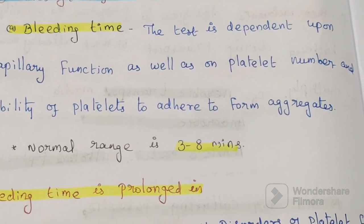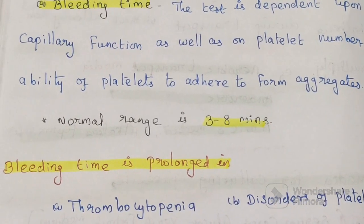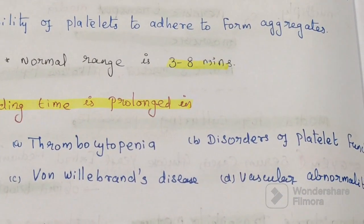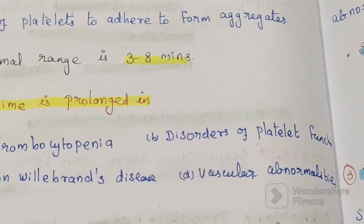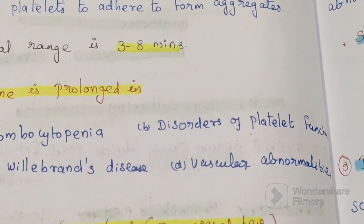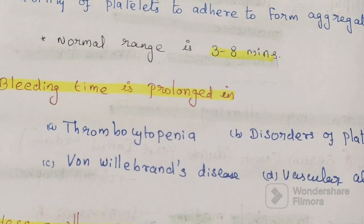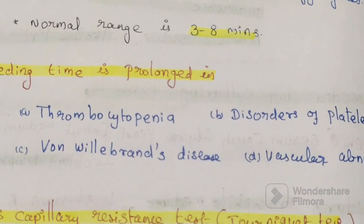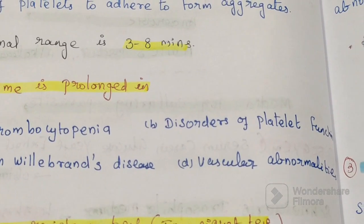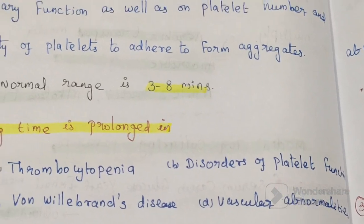Bleeding time is prolonged in four conditions: thrombocytopenia, disorders of platelet function, von Willebrand's disease, and vascular abnormalities.